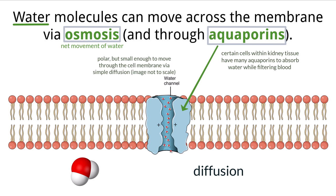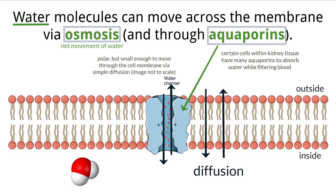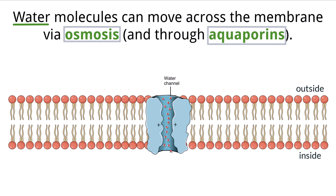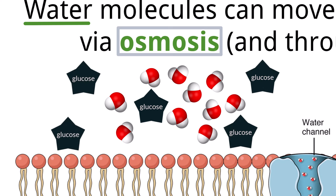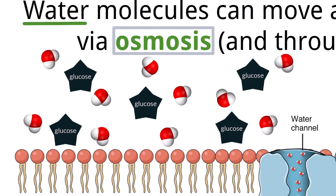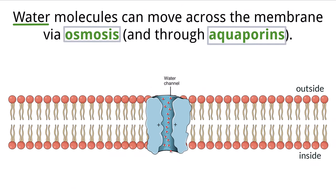Water can diffuse directly through the cell membrane or through an aquaporin. Solute concentration differences between the inside and outside of the cell drive the passive diffusion of water, which means there can be times when more water is moving in, more water is moving out, or about the same amount is moving in and out — resulting in a net change of zero. Water molecules tend to spread out evenly when they contain dissolved particles, so they would not clump together but instead be evenly distributed among solutes.